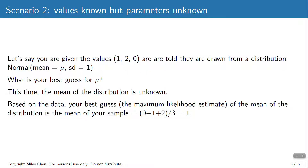On the other hand, suppose I give you values 1, 2, and 0, coming from a normal distribution with unknown mean. What's your guess for the mean? This is maximum likelihood estimation — your data is 0, 1, and 2. For the normal distribution, the MLE for the mean is the sample mean: 0 plus 1 plus 2 divided by 3 equals 1. Now imagine data is 1, 2, and a missing value x, from a normal distribution with unknown mean. What's your best guess for x and for the unknown parameter mu?